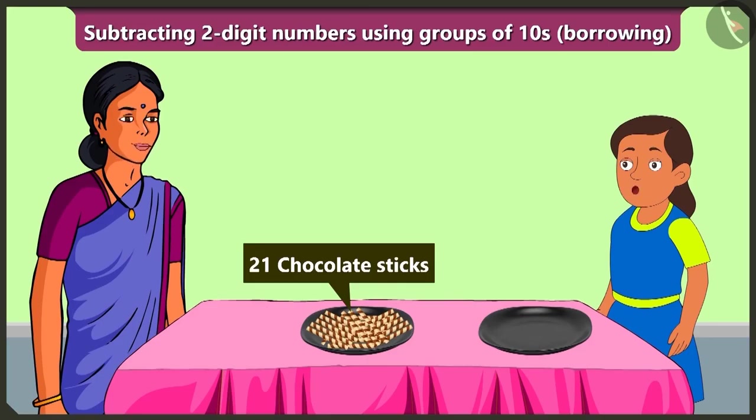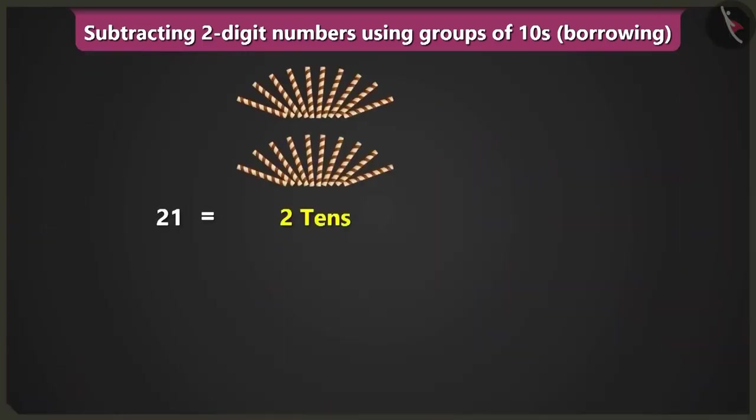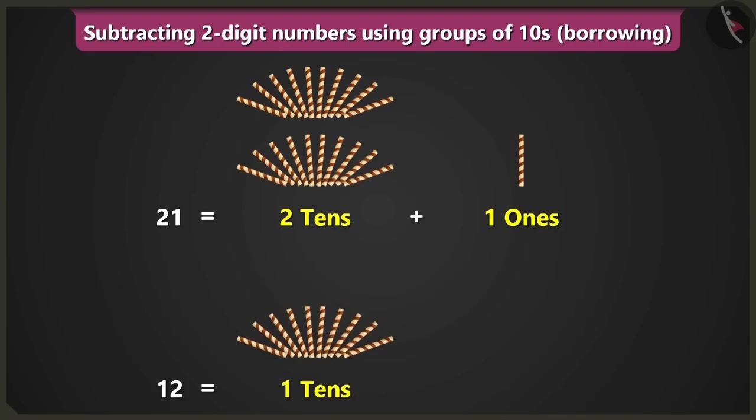So to know this, we will have to subtract from two tens and one ones, twelve which is one ten and two ones.